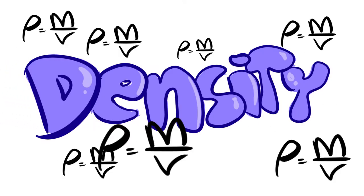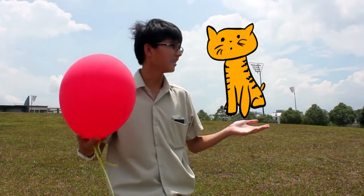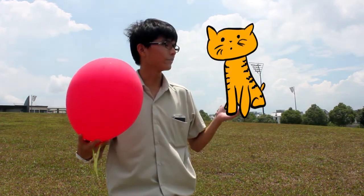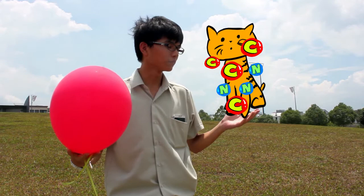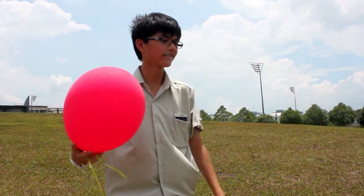Well, you're right, but it's not as simple as that. This is a balloon and it's filled with helium, making it less dense than the surrounding air. Hence, it rises. And this is a cat, and it's filled with lots of stuff that is denser than the surrounding air. Hence, it does not rise.